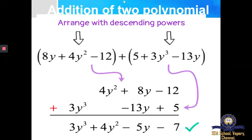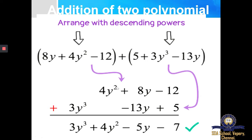So this is the question given to us: 8Y plus 4Y square minus 12 should be added to 5 plus 3Y cube minus 13Y. Step 1: first of all you are supposed to rewrite this polynomial in standard form. Rewriting it in standard form — first we have to write the one with the highest power, then the power 1 term, and then the constant.